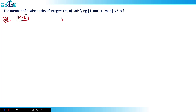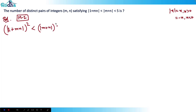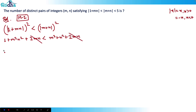Method two: since mod has a possibility of being negative, to rule out that negative possibility we square both sides. So |1 + mn|² < |m + n|². The mod is removed because a negative squared becomes positive. Expanding: 1 + m²n² + 2mn < m² + n² + 2mn. The 2mn terms cancel out on both sides.